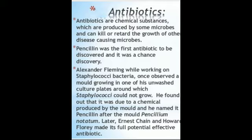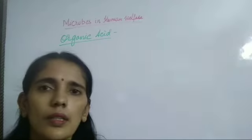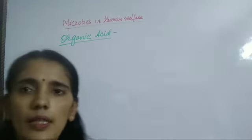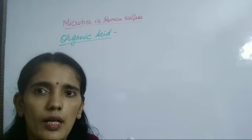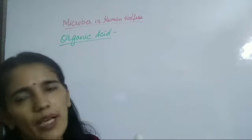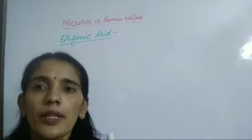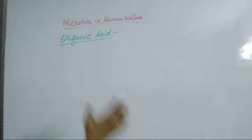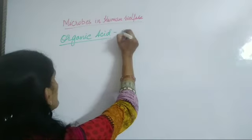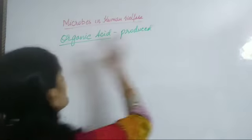Microbial fermentation is used for commercial production of several essential vitamins. For example, riboflavin is synthesized by Ashbya gossypii. Vitamin B12 is also synthesized by microorganisms. Next, let us discuss some organic acids — many microbes like bacteria and fungi help in the production of organic acids.